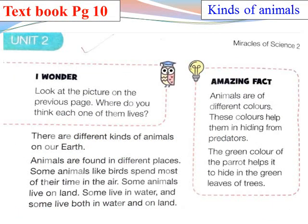Open your textbook page number 10. Write day and date on the top. There are different kinds of animals on our earth. Animals are found in different places. Some animals, like birds, spend most of their time in the air.